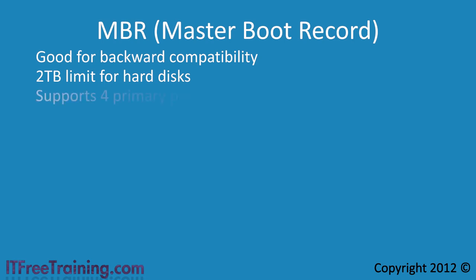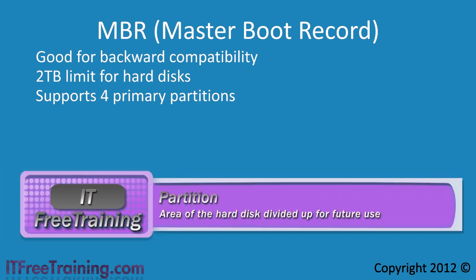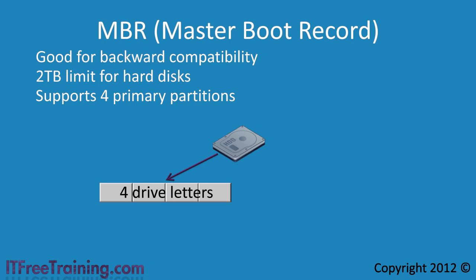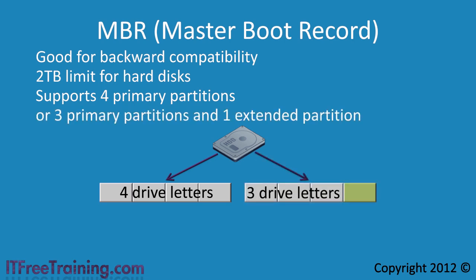With MBR you can create up to 4 primary partitions. A partition in simple terms is an area of hard disk that has been divided up. Once a partition is created it is usually assigned to a volume and assigned a drive letter. Using primary partitions you could have 4 drive letters per hard disk. To increase this number, a hard disk can have 1 of these primary partitions changed to an extended partition. Inside the extended partition you can create logical partitions, taking the total number of partitions an MBR disk can have up to 26.